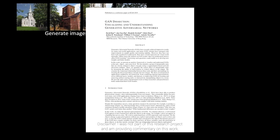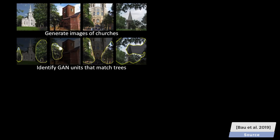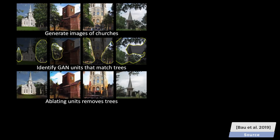Dear Fellow Scholars, this is Two Minute Papers with Károly Zsolnai-Fehér. This paper describes a new technique to visualize the inner workings of a generator neural network — a neural network that is able to create images for us. The key idea here is dissecting this neural network and looking for agreements between a set of neurons and concepts in the output image.